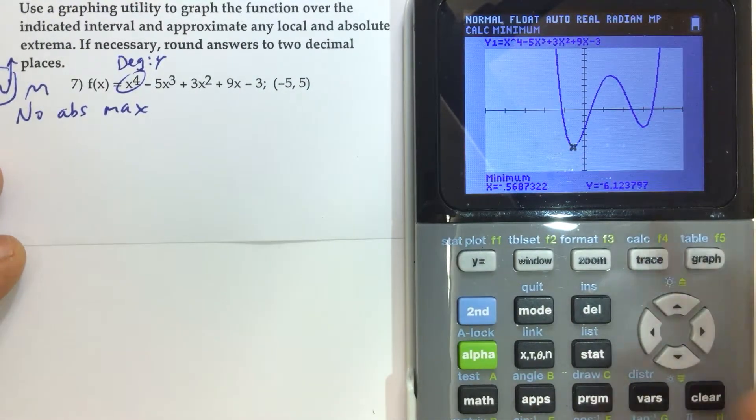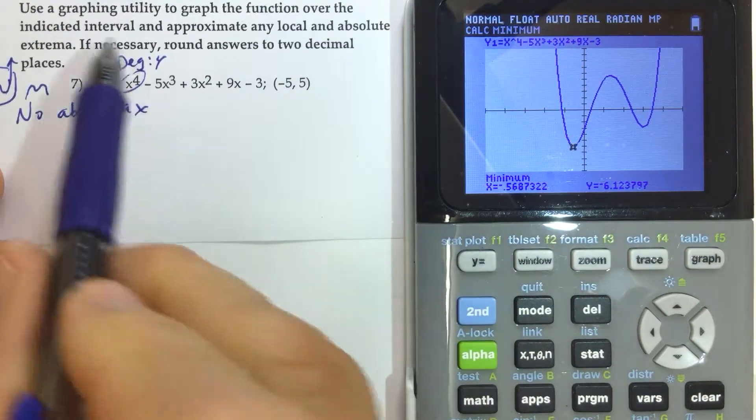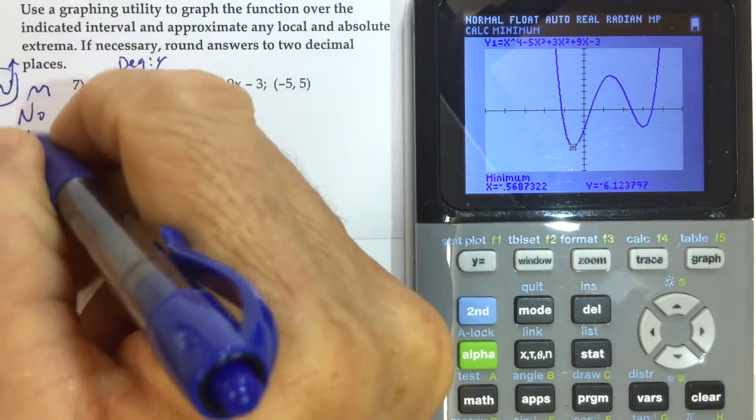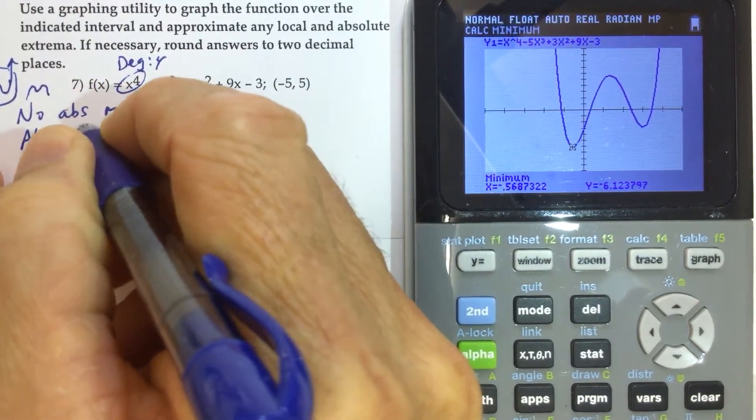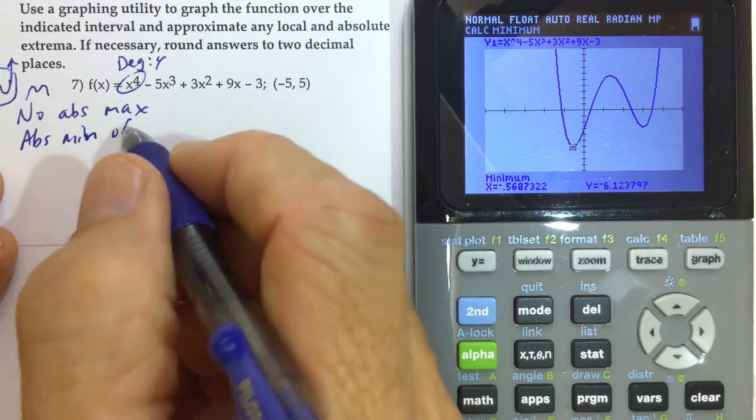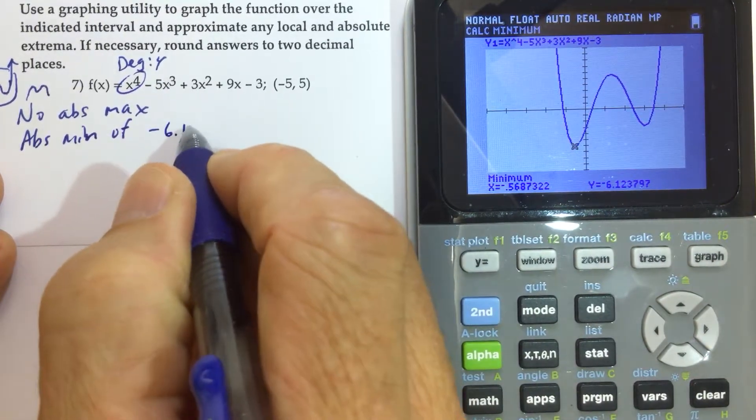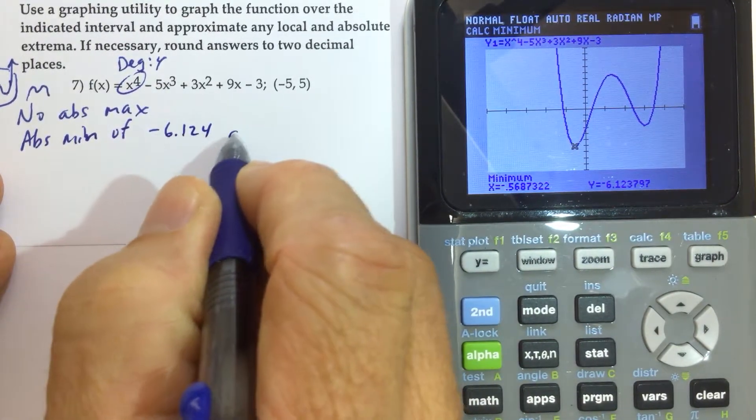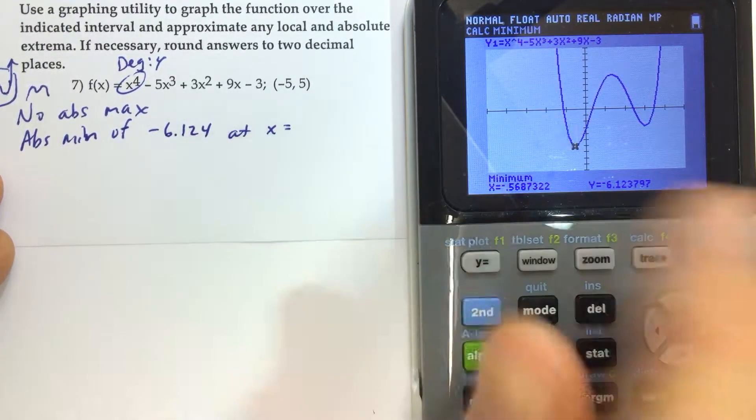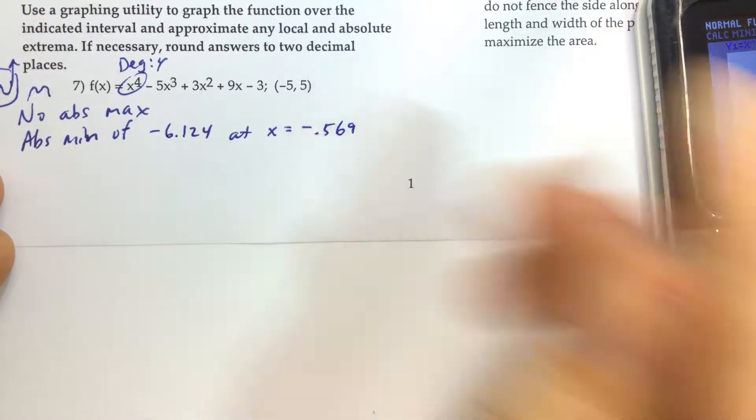So the minimum coordinates are here, the x and the y coordinates. And it's asking us to approximate any local and absolute extrema. So the absolute min of, we'll round to the nearest three digits after the decimal, negative 6.124 at x equals negative 0.569. Negative 0.569. That's how we do that.